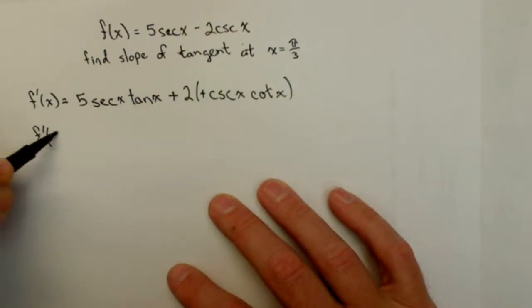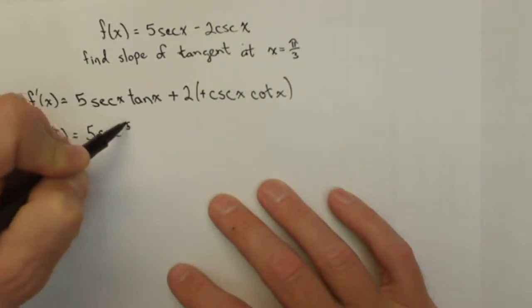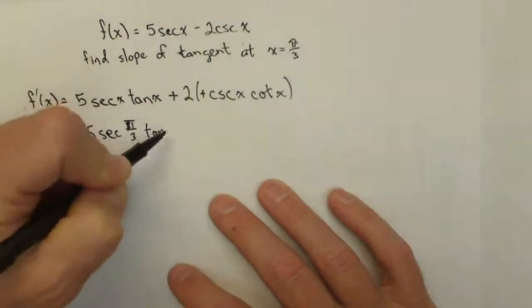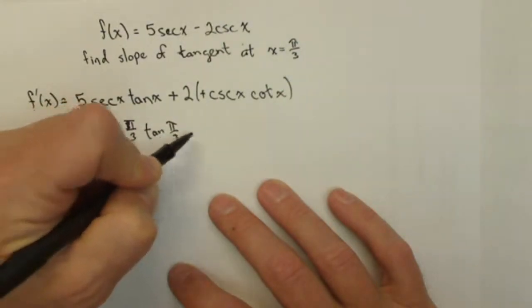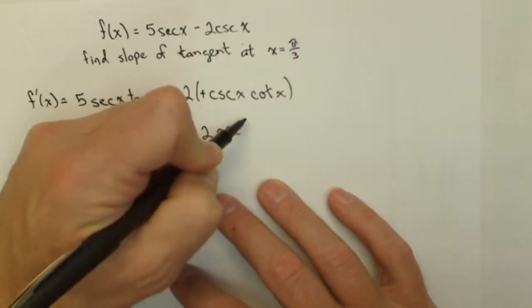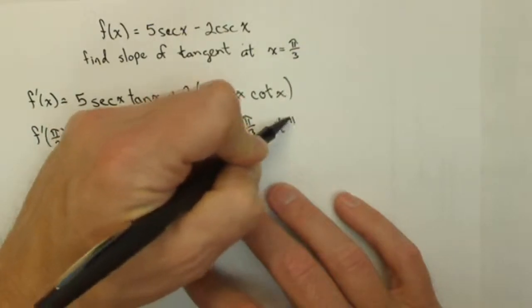f'(π/3) equals 5sec(π/3)tan(π/3) plus 2csc(π/3)cot(π/3).